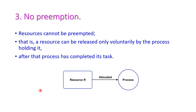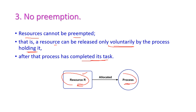The next condition is no preemption. No preemption means a resource cannot be preempted — that is, once a resource is allocated to a process, it will not be taken away in between. The resource can be released only voluntarily by the process holding it, after the process has completed its task. Then only will the resource be allocated to some other process.